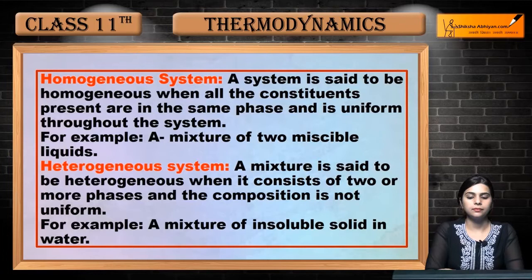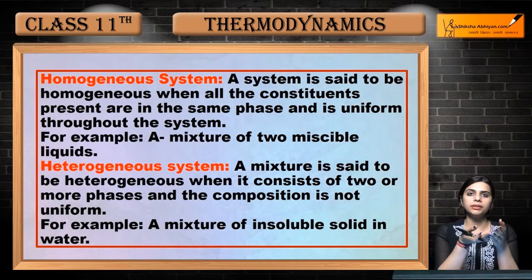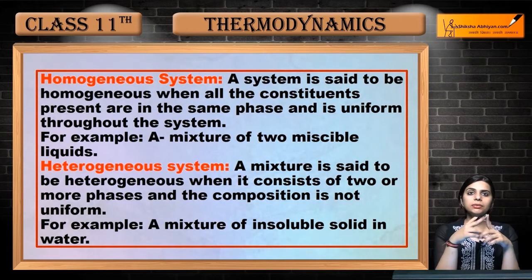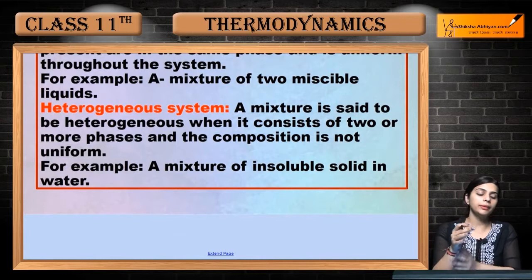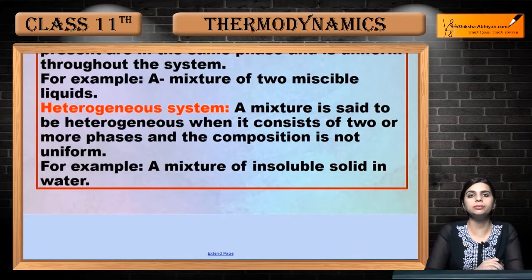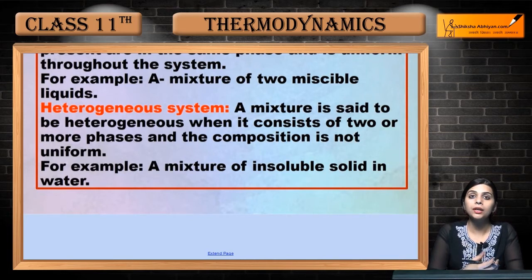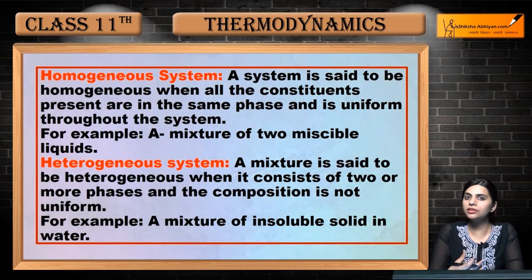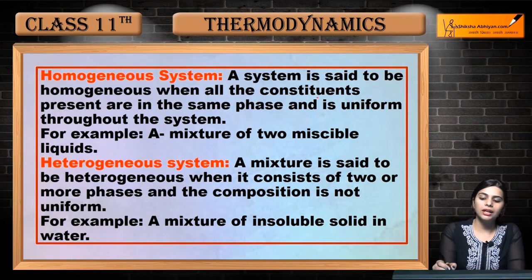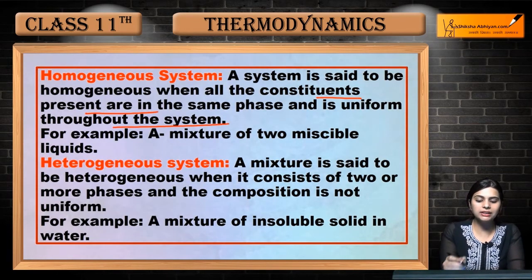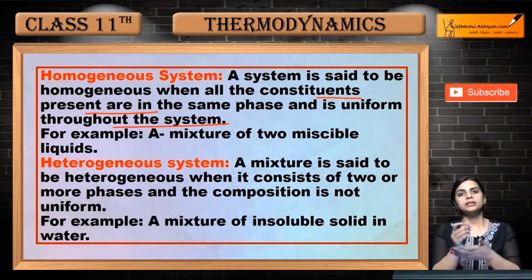Now we'll talk about some more systems. Last video mein humne system and isolated system dekha, now next system is homogenous system. This is a very important system. Homogenous means that everything is like one. A system is said to be homogenous when all the constituents present are in the same phase and is uniform throughout the system.